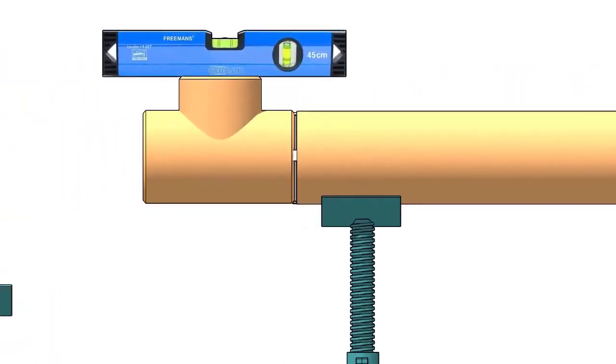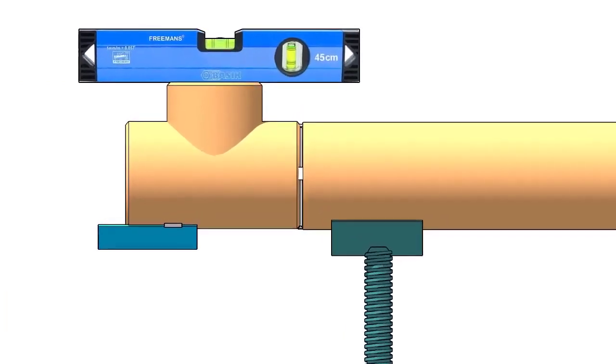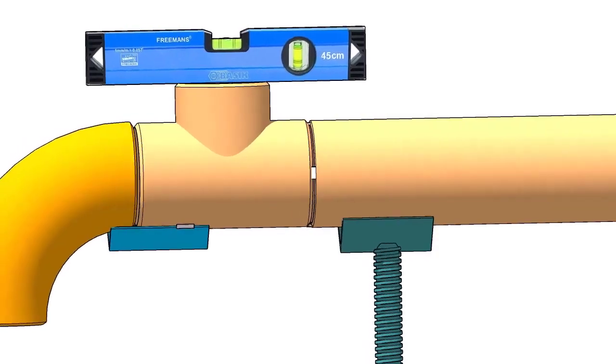Tack weld a piece of angle below the tee if you don't have a ready-made pipe clamp. The size of the angle cleat may vary according to the size of the elbow. Here I am using a 50-50 angle because the pipe diameter is 6 inches.